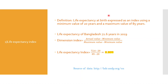The life expectancy at birth is expressed as an index using a minimum value of 20 years and a maximum value of 85 years. This range has been set by the United Nations Development Programme (UNDP). From the UNDP website, you can get data for any country for any year. For Bangladesh, life expectancy is 72.6 years in 2019.